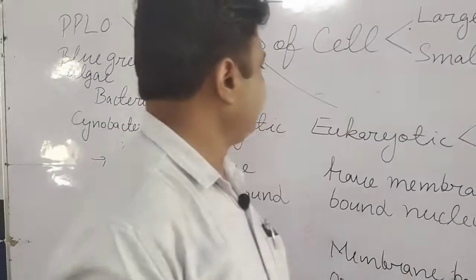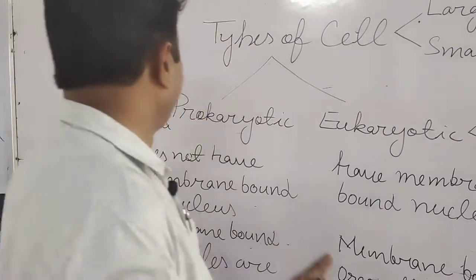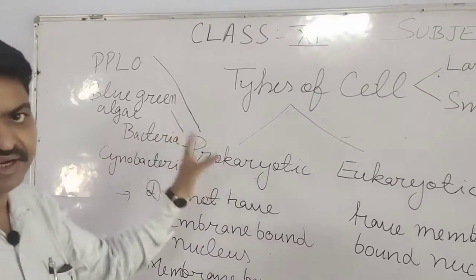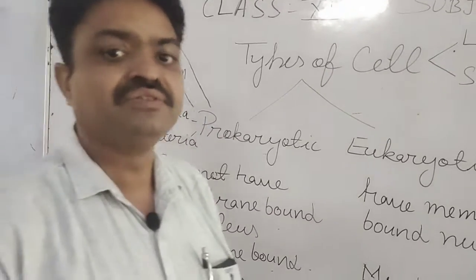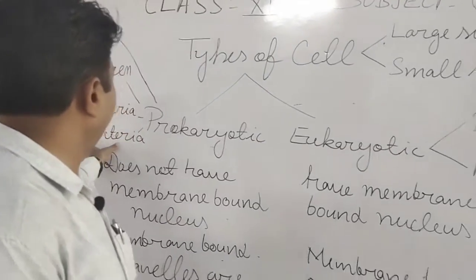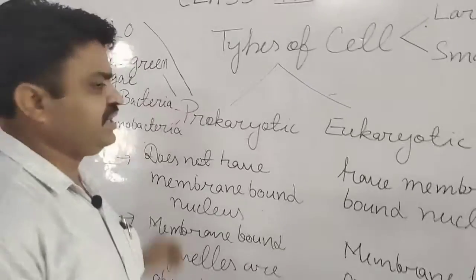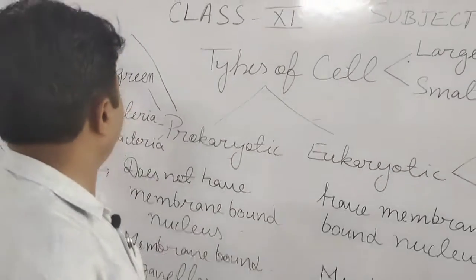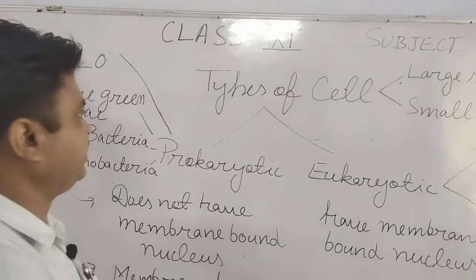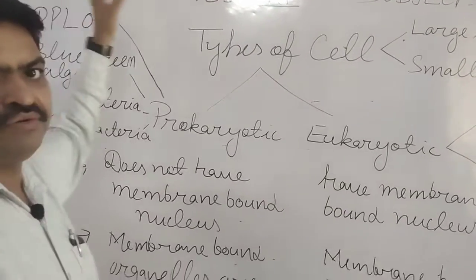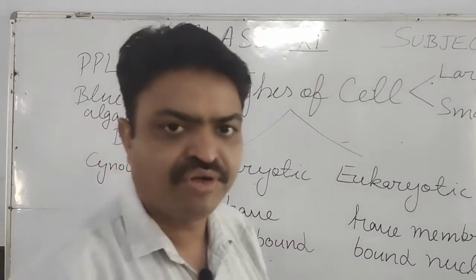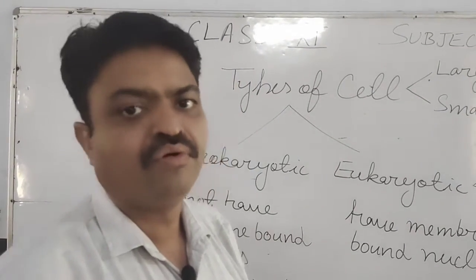Now, for examples of prokaryotic cells: all bacteria come in the category of prokaryotic cell, that is why they are known as prokaryotes. Cyanobacteria or blue-green algae is an example. PPLO — pleuro-pneumonia-like organisms — are also examples of prokaryotic cells.